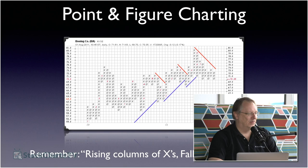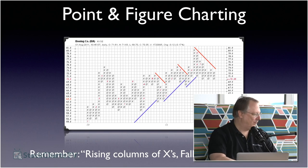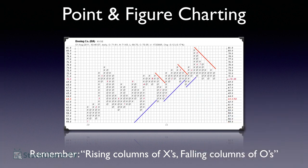Point and figure charting — the charts with X's and O's on graph paper. The key thing to remember: a rising column of X's and a falling column of O's. As stock prices increase you're in a column of X's going up, until stocks reverse and go down in a falling column of O's.